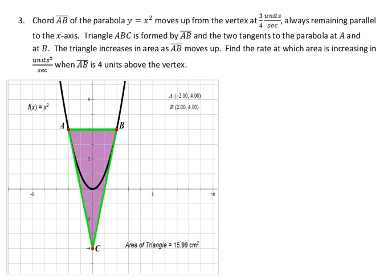The triangle is formed by the chord AB and by the tangents of the curve at A and at B. Everything is changing in here and the area is changing as that chord moves up along the y-axis.